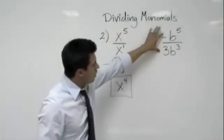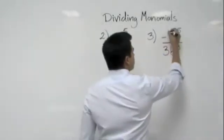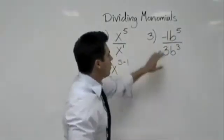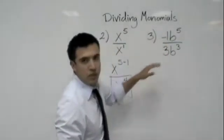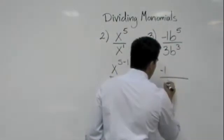What about this one? Well remember, when there's not a number in front of a variable, we put a one there. So negative one over three would stay negative one over three.